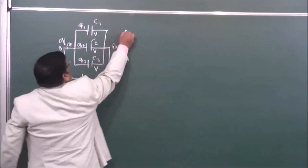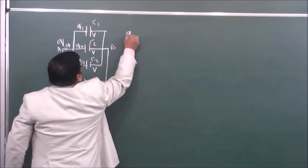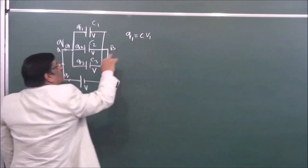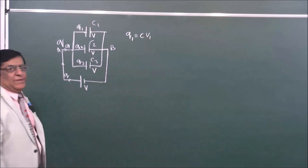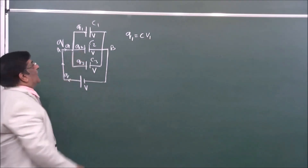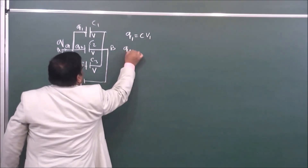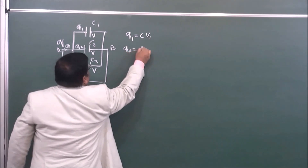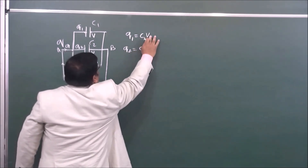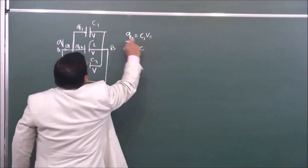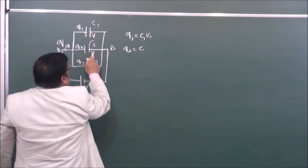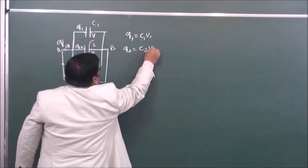The charge Q1 will be C1 multiplied by V — this formula we have read. Then, how much charge will Q2 carry? Q2 is equal to C2 multiplied by V.